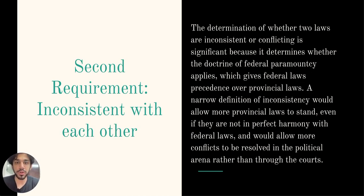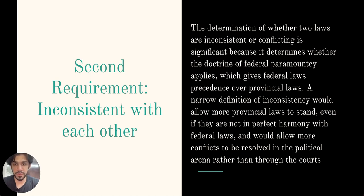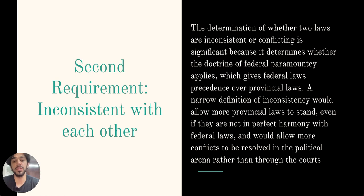The second requirement of the doctrine of federal paramountcy is determining whether two laws are inconsistent with each other. This is significant because it determines whether the doctrine applies, giving federal law precedence over provincial laws. A wide definition of inconsistency would result in more provincial laws being invalidated, giving the federal government more power. A narrow definition would allow more provincial laws to stand, even if they are not in perfect harmony with federal laws. Canadian courts have generally followed a course of restraint, adopting a narrow definition of inconsistency.